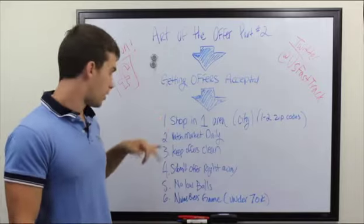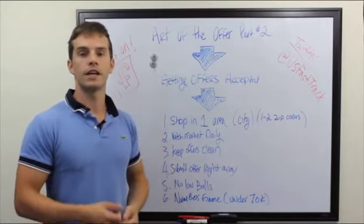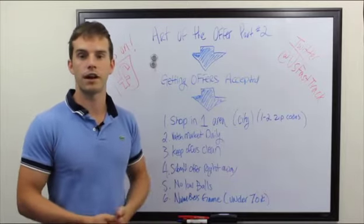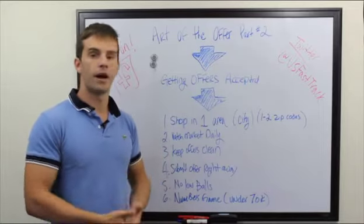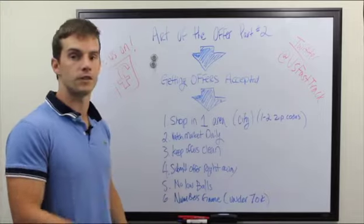Number five, no low balls. Especially right now, we're seeing a shortage of inventory. If you're looking to get a discount on a property that's already listed at $40,000, $50,000, $60,000—good luck. My offers are always much higher than listed, especially if it's in good condition.